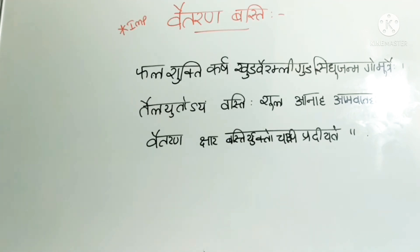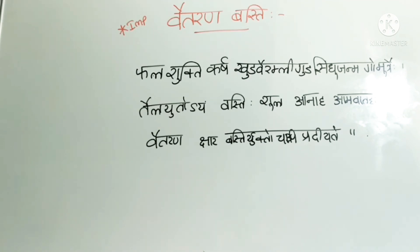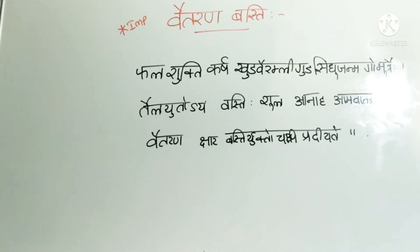The composition of Vaitarana Basti: Jagari (jaggery) — 28 grams; Saindhava lavana (rock salt) — 15 grams; Sneha (oil/fat) — 50 ml; Amlika (tamarind) — 50 grams; Gomutra (cow's urine) — 200 ml. The total volume is approximately 350 ml.